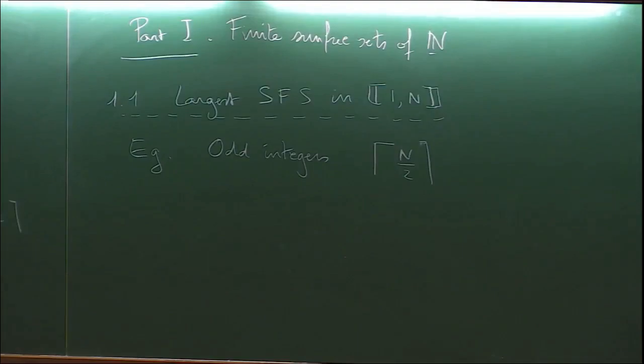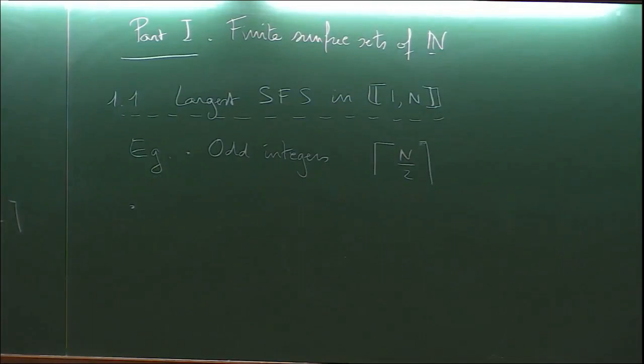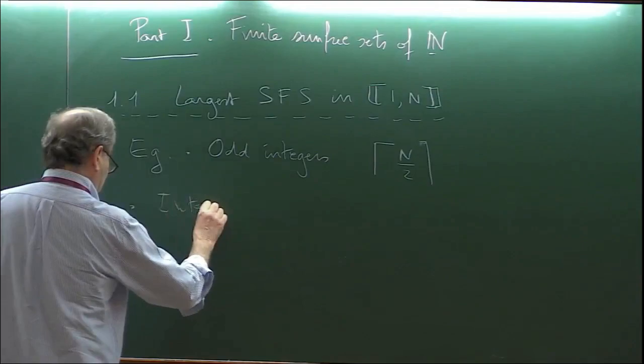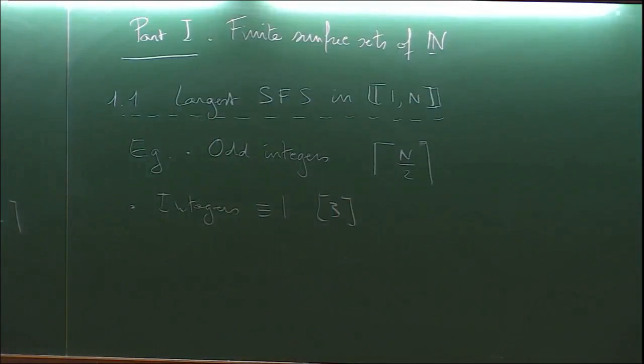Another type: integers congruent to 1 mod 3. That was integers congruent to 1 mod 2 before; now integers congruent to 1 mod 3. The count is about N/3. This is a good example but not the largest one.